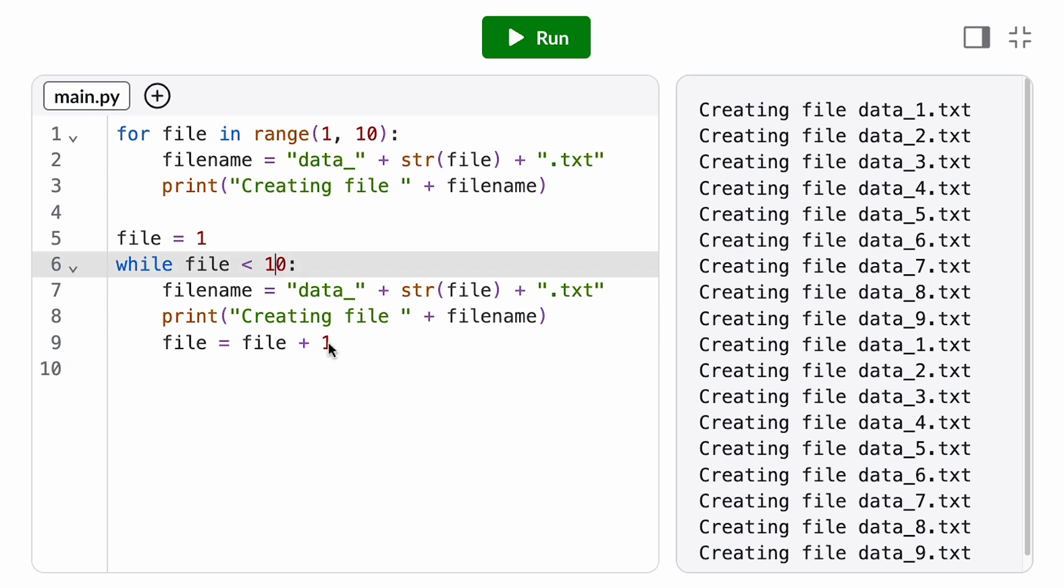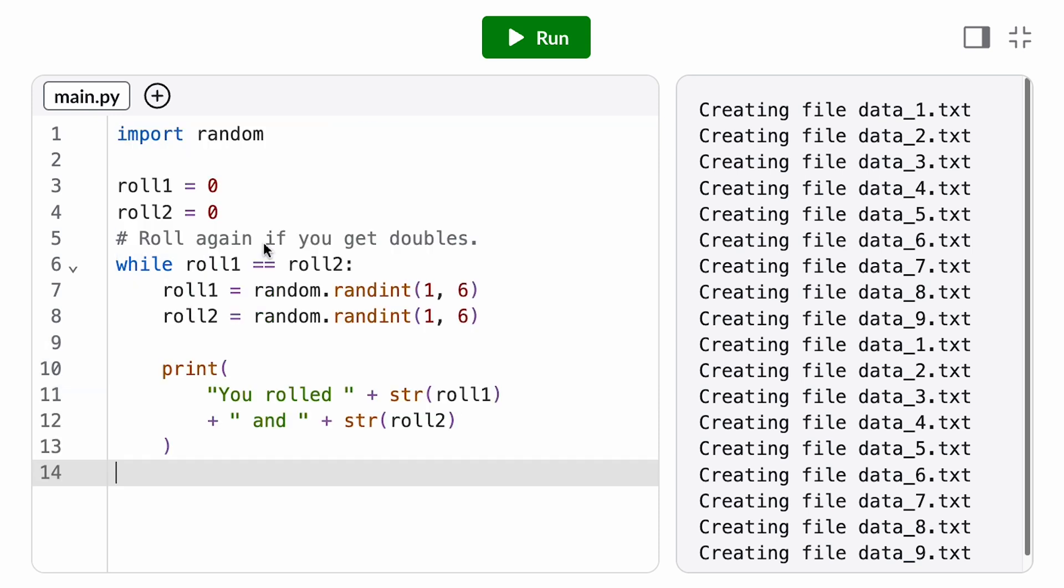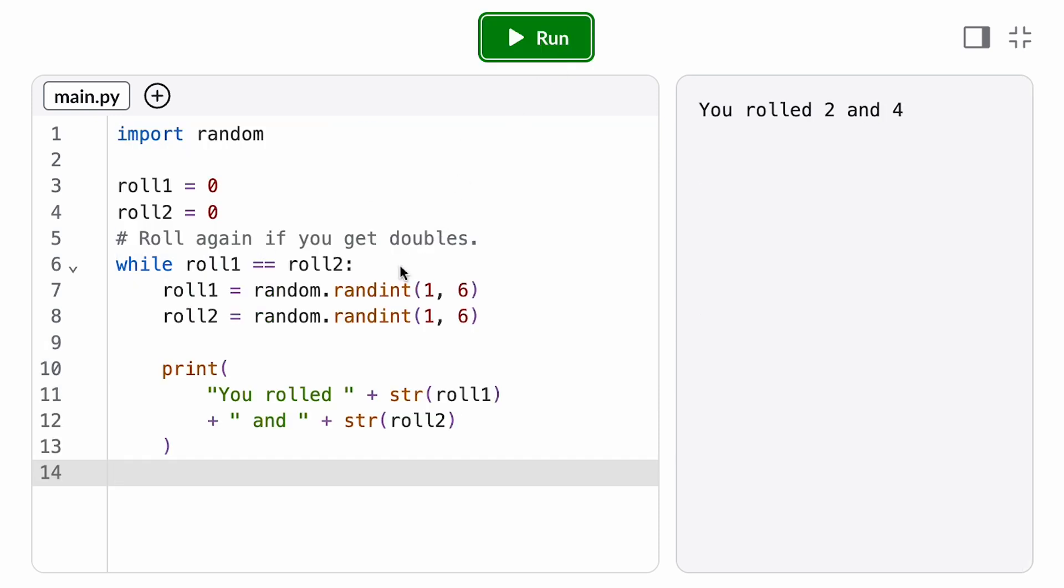For loops only work for counter-based repetition, when we know up front how many times the loop needs to repeat. If our loop condition waits on a program state that involves randomness or user input, we may not know up front how many times the loop is going to repeat, so we'll need a while loop to express that loop condition.